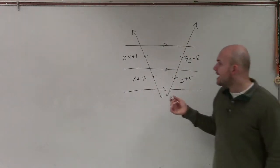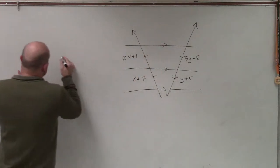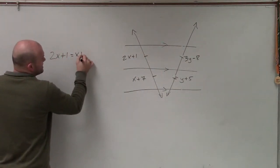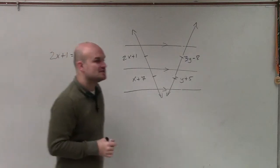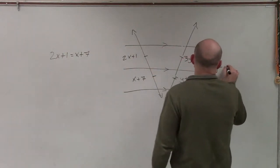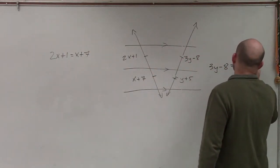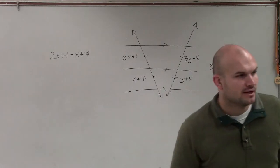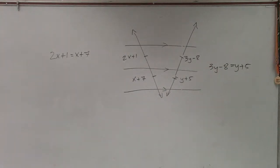All right? So now I already know I can set up two equations. I can now write 2x plus 1 equals x plus 7. And I can also write the equation 3y minus 8 is equal to y plus 5. OK? And we're going to have a big issue if you're not writing this down.